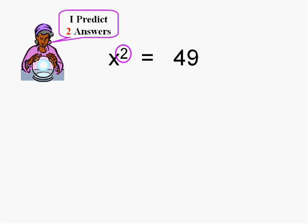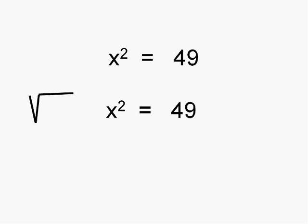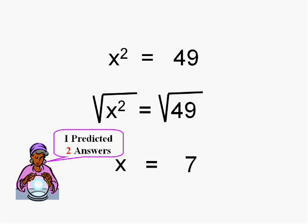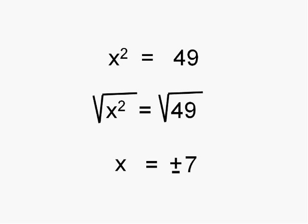Now another way to do this, other than using the zero property, is to take the square root because that undoes the square. Of course if I do it on the left side, I have to do it on the right side. Now the square root of 49 is 7. Supposed to get two answers. Remember the square root of 49 isn't just 7, it's plus and minus 7. So you should always get two answers of some sort with a quadratic equation.